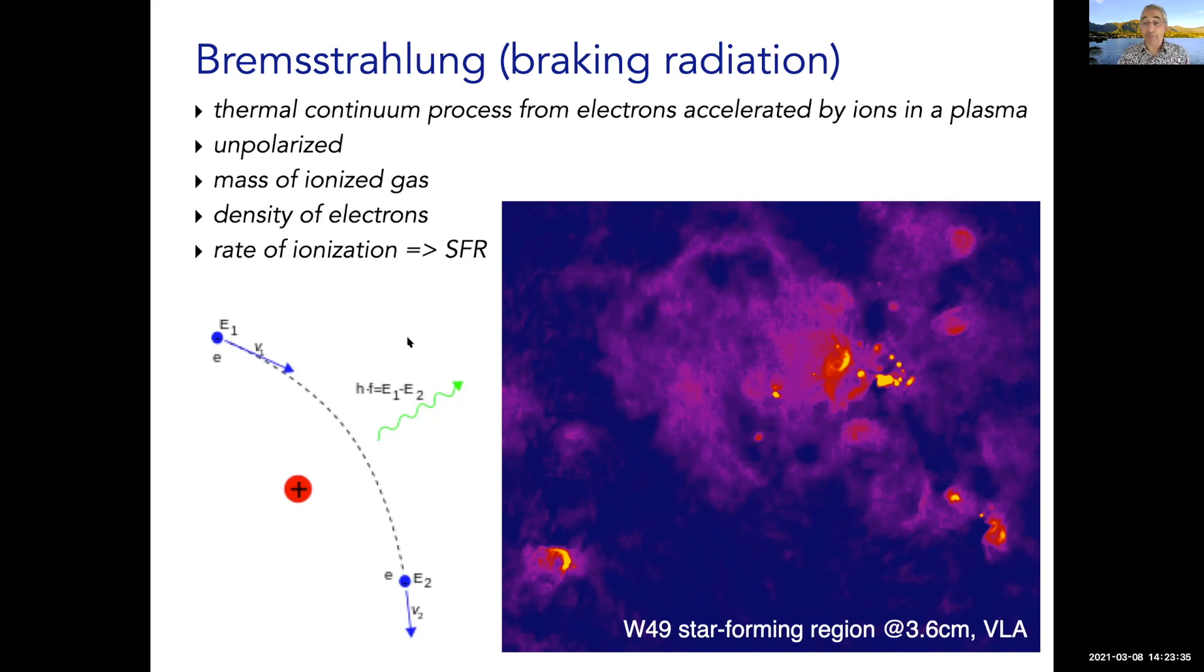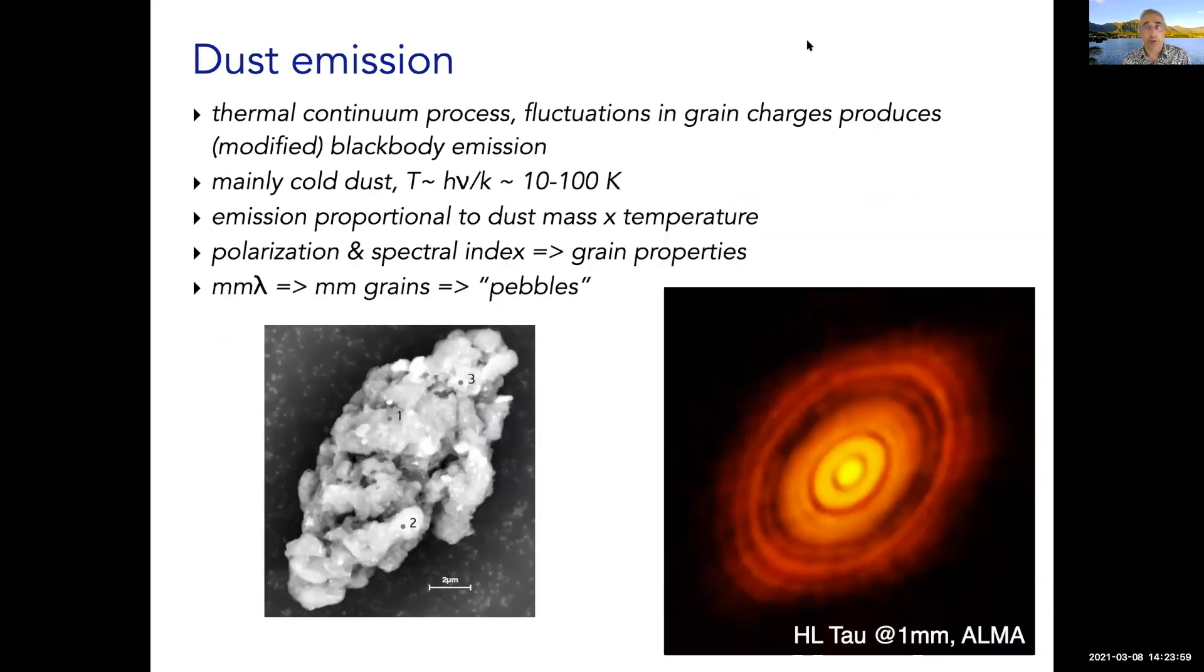The amount of bremsstrahlung emission directly relates to the number of encounters between the electrons and the positively charged particles. You can get a mass of the ionized gas. It relates to encounters between particles, so also density. Because maintaining a plasma in the ISM requires ultraviolet radiation from massive stars with short lifetimes, this gives you a direct handle on the star formation rate. Here we have a massive star forming region, W49, showing predominantly bremsstrahlung gas at 3.6 centimeters with the VLA.